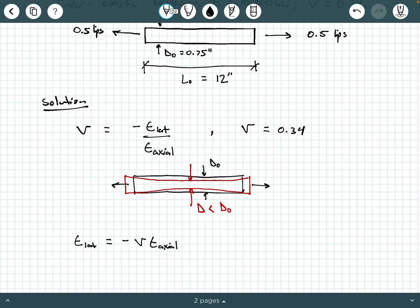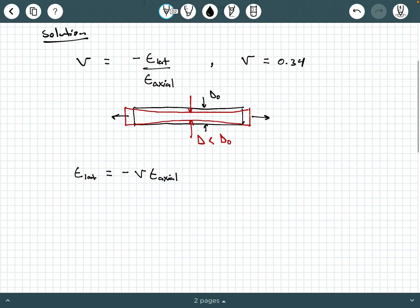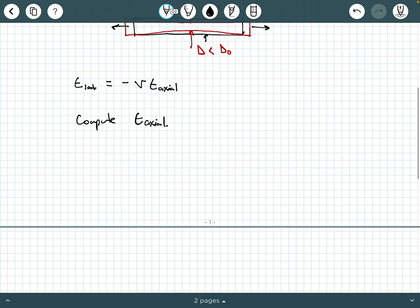We can rearrange our Poisson ratio relationship and say epsilon lat is equal to negative Poisson ratio times epsilon axial. We already know the Poisson ratio is 0.34. So what we really need to do is calculate epsilon axial. The problem said assume linear elastic behavior.